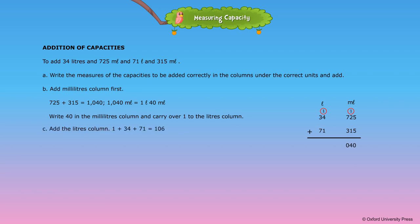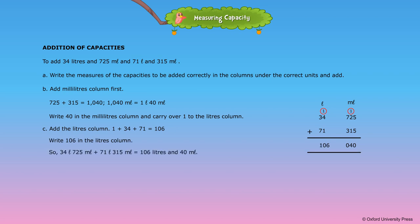C. Add the liters column. 1 plus 34 plus 71 is equal to 106. Write 106 in the liters column. Thus, 34 liters 725 milliliters plus 71 liters 315 milliliters is equal to 106 liters and 40 milliliters.